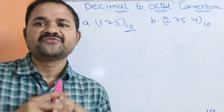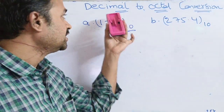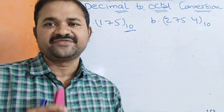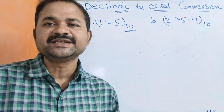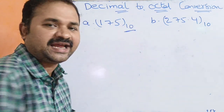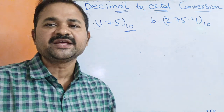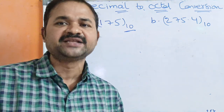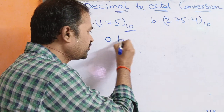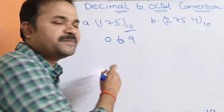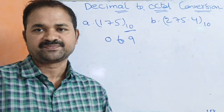In this video, we are going to discuss decimal to octal conversion. Decimal means the base value is 10. A decimal number is a combination of symbols from 0 to 9, so a decimal number may contain symbols from 0 to 9.